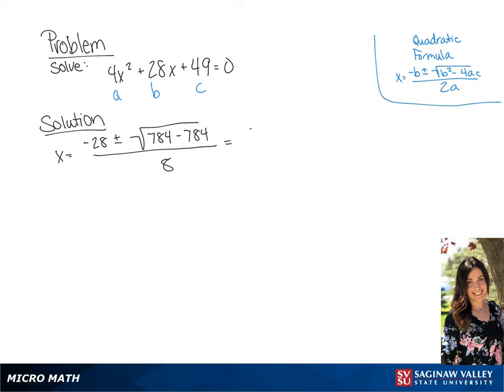If we simplify this, we will get negative 28 over 8, giving us an answer of negative 7 over 2.